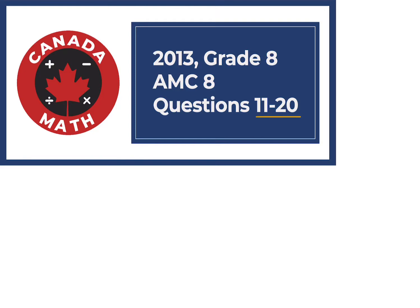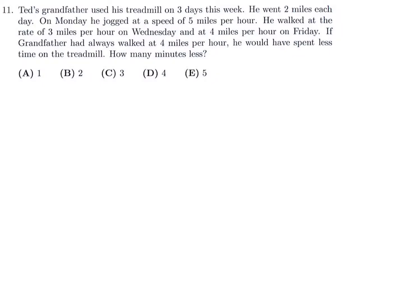Questions 11 through 20 on the 2013 Grade 8 AMC 8. Ted's grandfather uses his treadmill on three days a week. He went two miles each day. On Monday he jogged at a speed of five miles per hour. He walked at a rate of three miles per hour on Wednesday and four miles per hour on Friday.